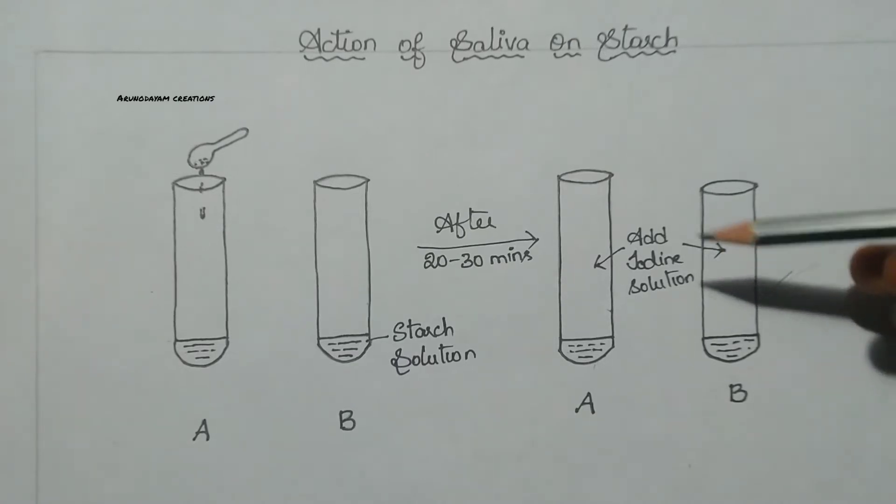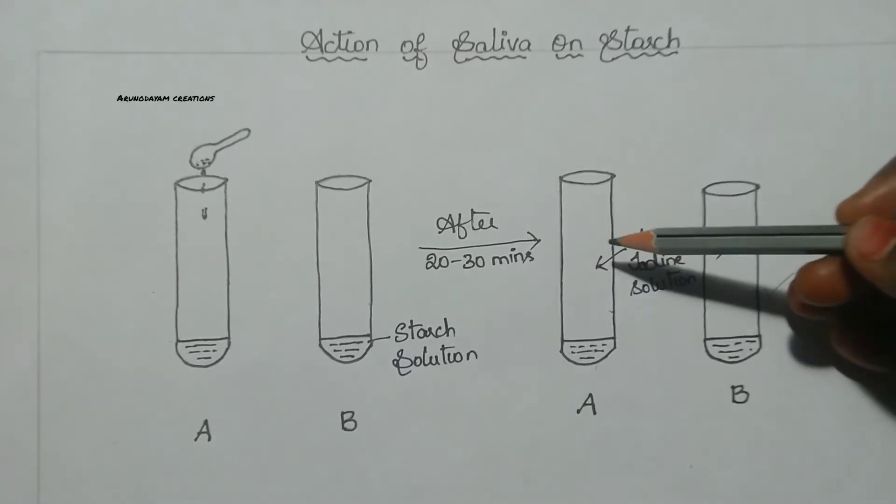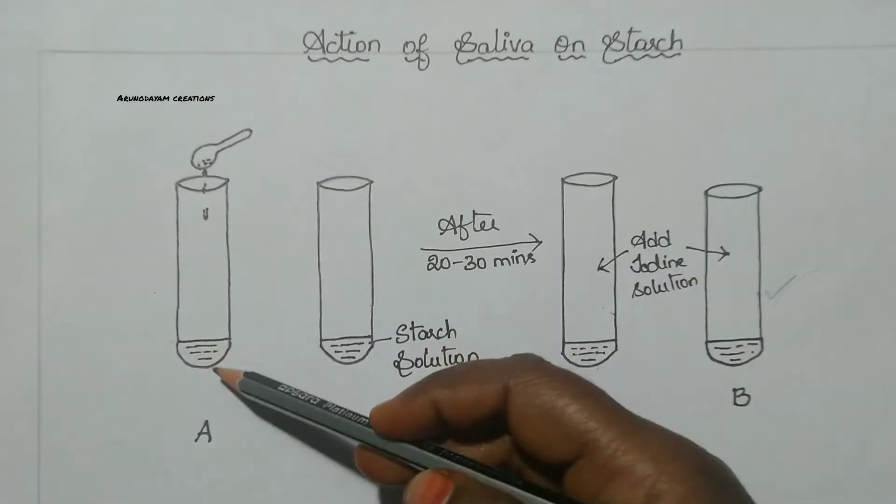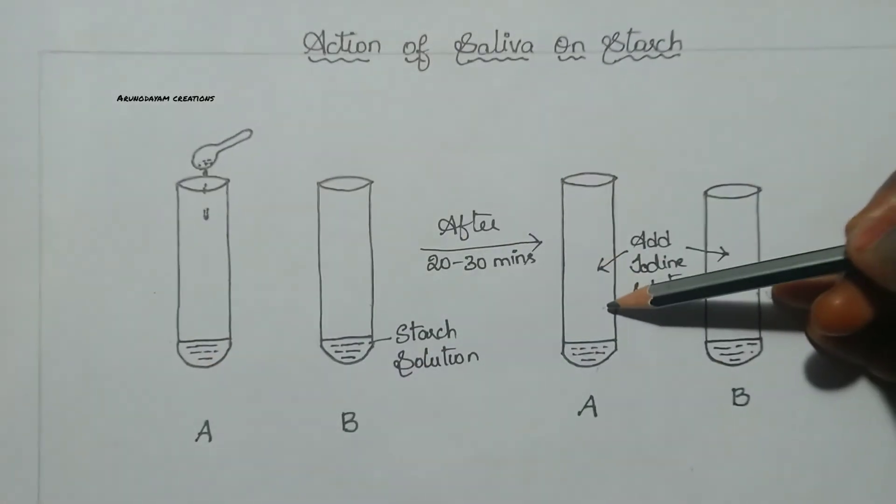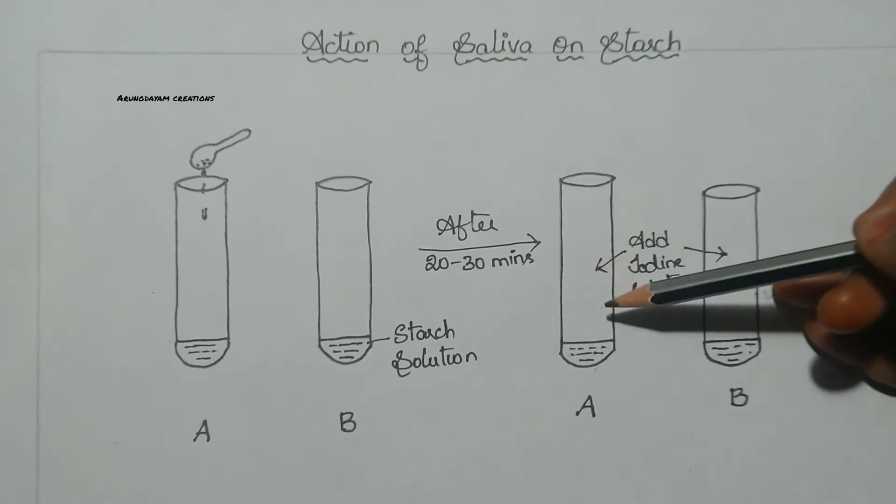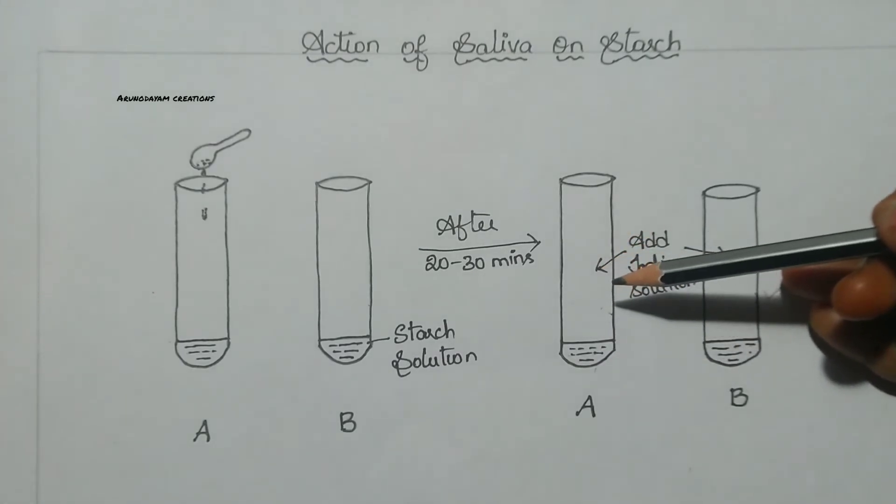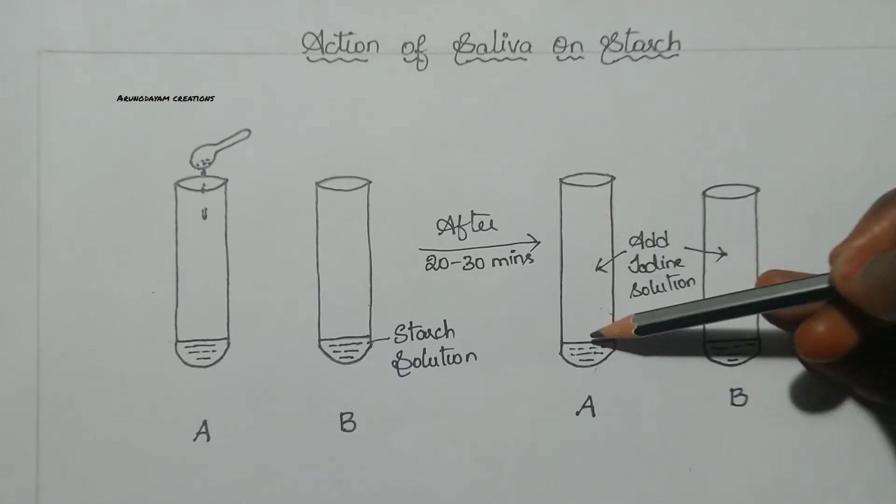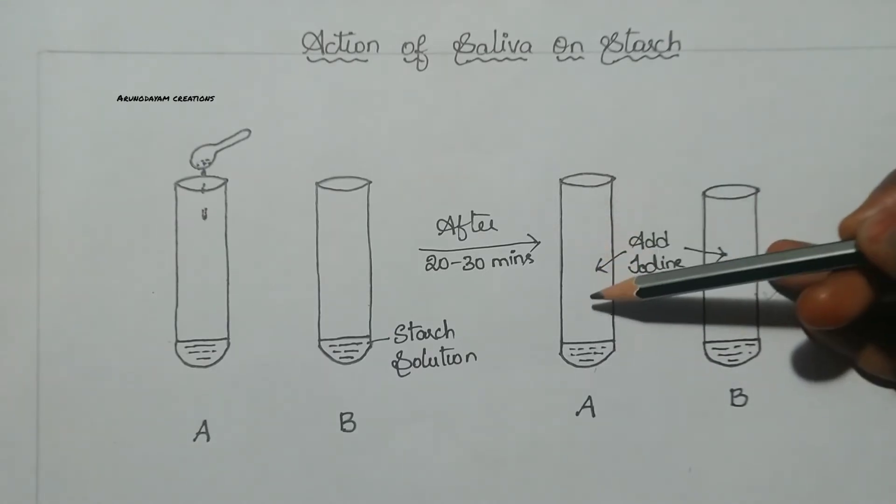And next up, we have added iodine solution to test tube A also. But here, the solution remains colorless. The solution will not turn into blue-black color. Why? Actually, we have added starch solution to test tube A also. After adding iodine solution, it must turn into blue-black color. But it is not turning, indicating the absence of carbohydrates here. Here in this test tube A, carbohydrates or starch are absent.